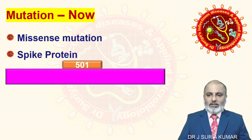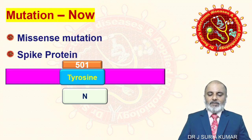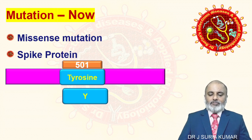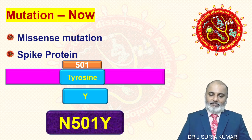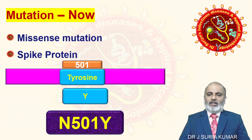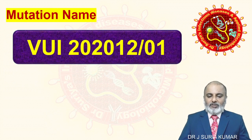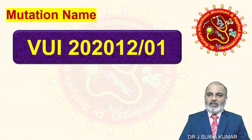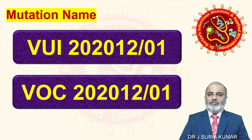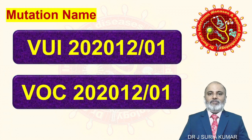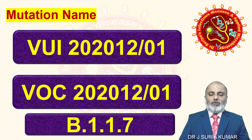Now in the same spike protein, at position 501, asparagine — called N — changed into tyrosine — called Y. So the new mutation is called N501Y. People are talking about this very seriously. This mutation was first named VUI 2020/12/01, and is currently called VOC. It is otherwise known as B.1.1.7.